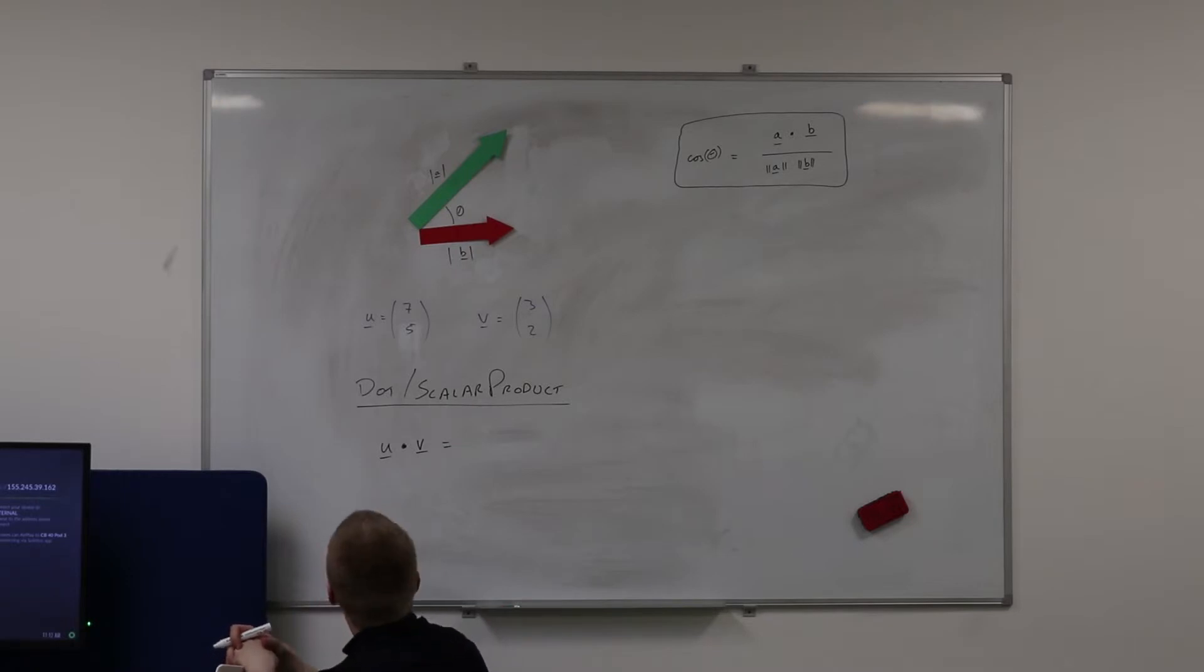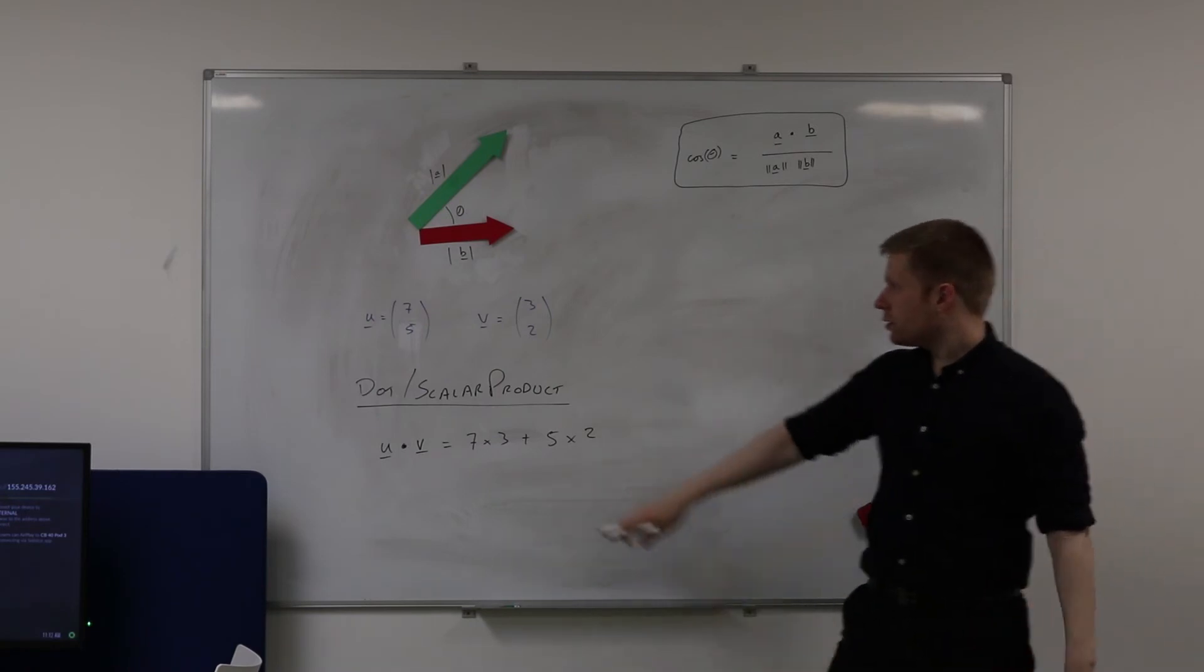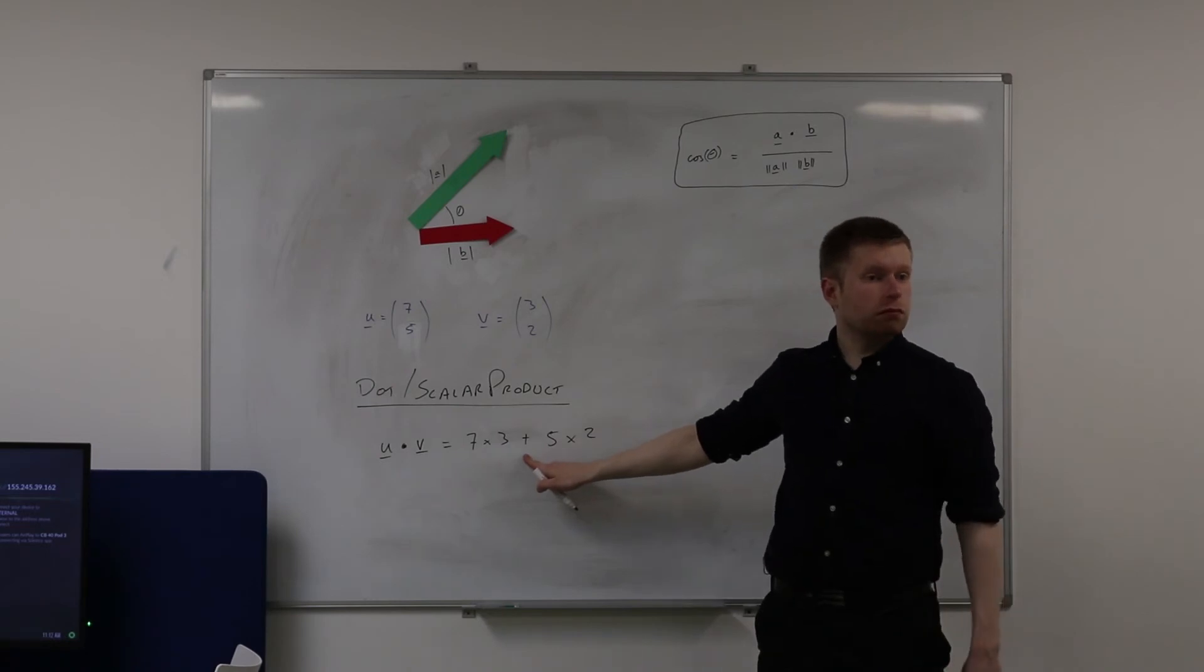And the way which this works is by multiplying corresponding elements together. So I would multiply the x direction, the cross direction components together. So 7 multiplied by 3. And then I would add that to the y's multiplied together. So 5 multiplied by 2. So the up and down components multiplied together. That there is the dot product. So I multiply corresponding elements together. So that multiplied by that, and that multiplied by that. And I just add them two together.